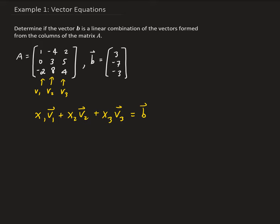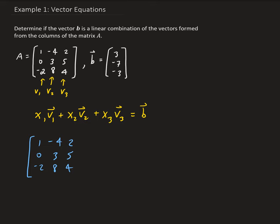What we're going to do is form our system — we're going to augment the matrix A and B together. So we have 1, negative 4, 2, 0, 3, 5, minus 2, 8, and 4. And we augment that with vector B: 3, minus 7, and minus 3.